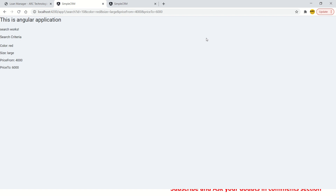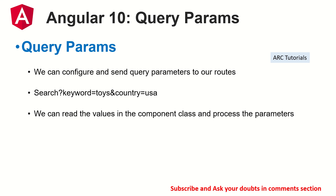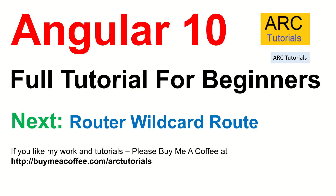There's another way to use query params through router links, but this tutorial is getting long, so I'll cover that in the next episode. Your homework is to practice query params, especially for querying, searching, or filtering scenarios. Drop any comments or doubts below — I'm happy to help. Thank you for joining; in the next episode we'll learn about router wildcard routes. If you like my work, consider buying me a coffee at buymeacoffee.com/ARCtutorials.